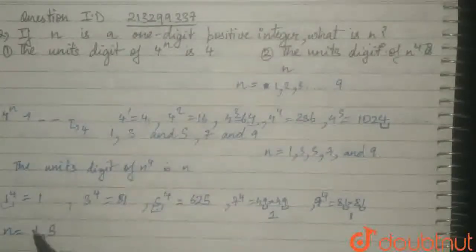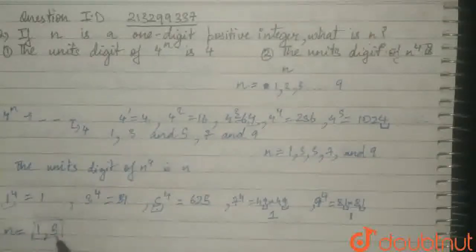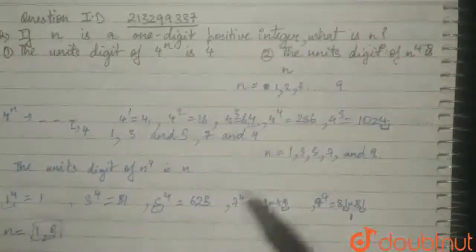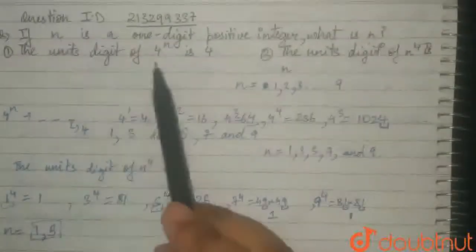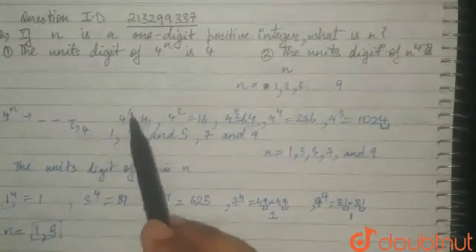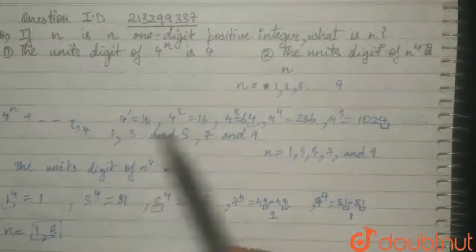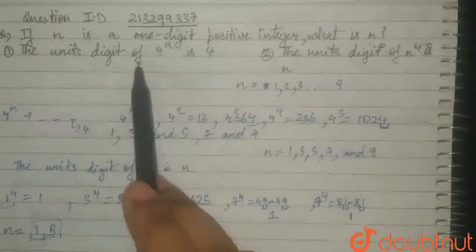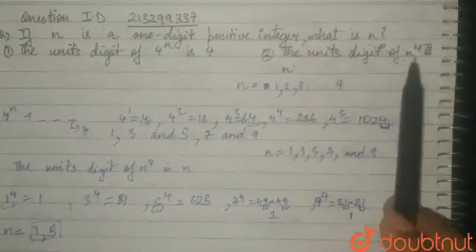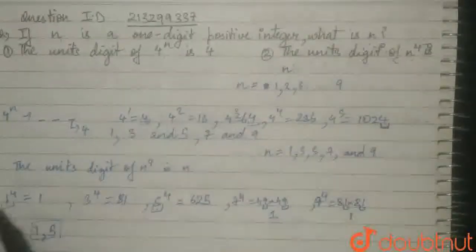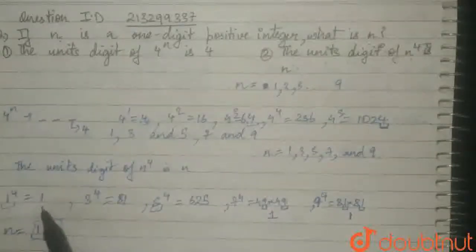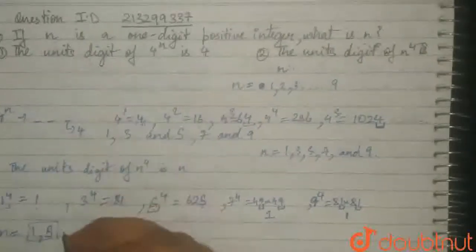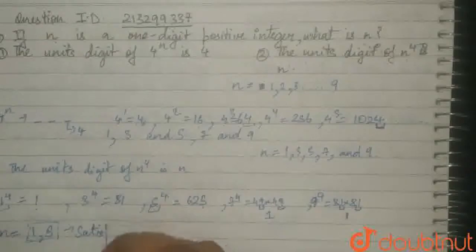Let's see if these two values satisfy all criteria. n is a 1 digit positive integer. Sure, 1 and 5 are 1 digit positive integers. The unit's digit of 4 raised to the power of n is 4. 4 raised to the power of 1 has a unit's digit of 4. 4 raised to the power of 5 has a unit's digit of 4. So it satisfies the first condition. Second condition, unit's digit of n raised to the power of 4 is n. Unit's digit of 1 raised to the power of 4 is 1. And unit's digit of 5 raised to the power of 4 is 5. So we see that the values n=1 and 5 satisfy all criteria.